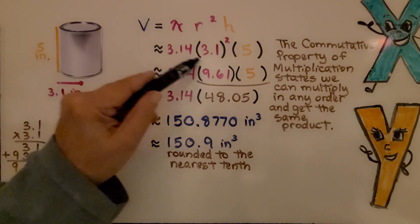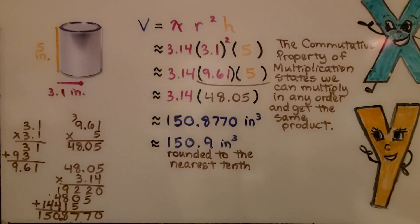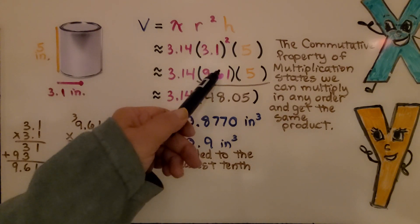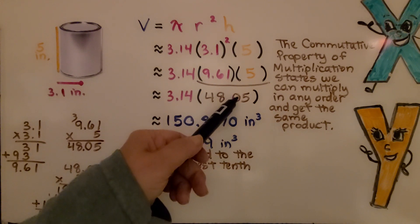Now we could multiply these two together, but the commutative property of multiplication states we can multiply in any order and get the same product. So we can multiply the radius squared by the height. We'll get 48.05.